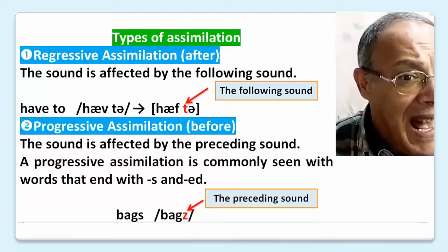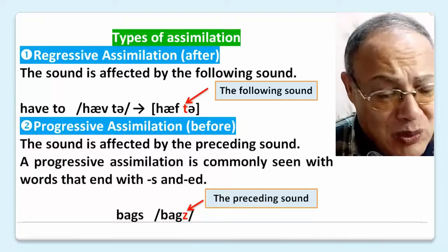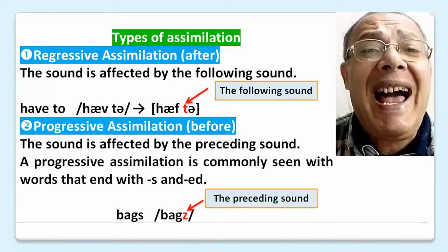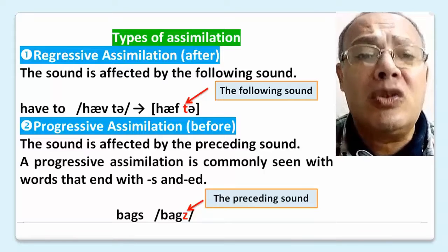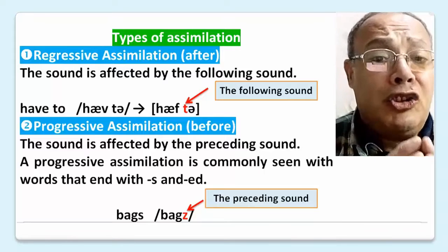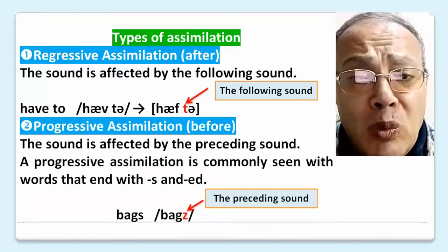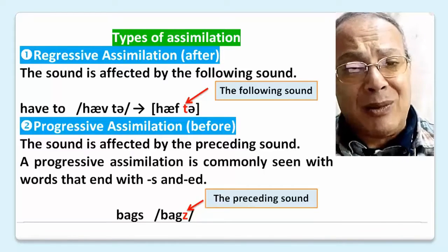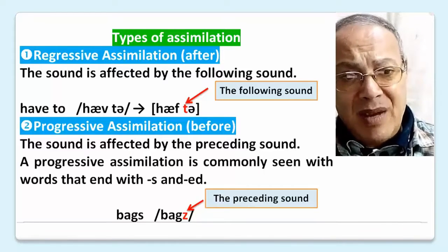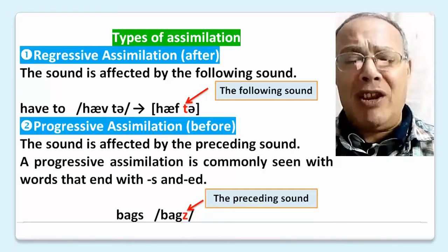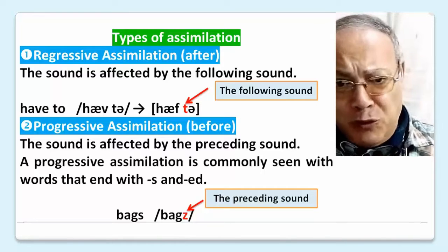For example, 'have to' becomes 'hafto' — 'to' is the following sound that causes the change. Progressive assimilation — the sound is affected by the preceding sound.